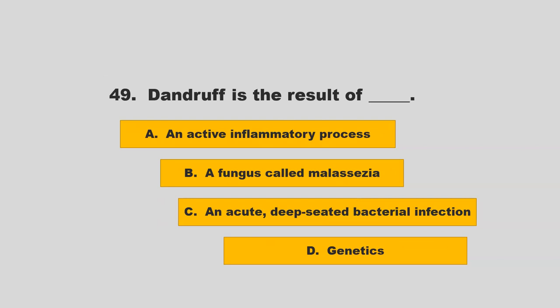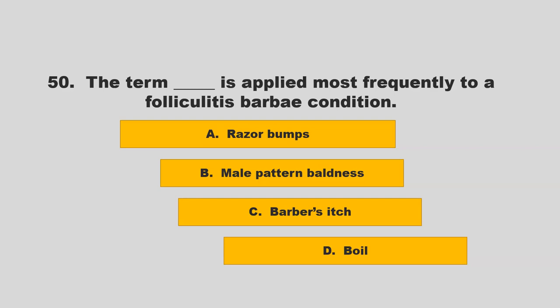Dandruff is the result of blank. Is it an active inflammatory process, a fungus called Malassezia, an acute deep-seated bacterial infection, or genetics? If you chose B, a fungus called Malassezia, you are correct.